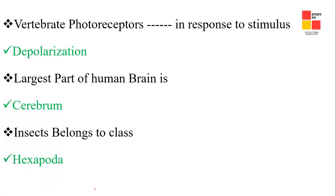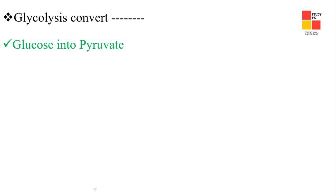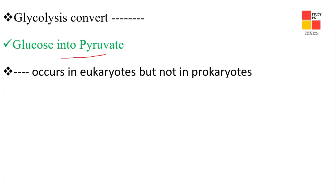Next one: insects belong to which class? The right answer is Hexapoda. Next one: glycolysis converts glucose into pyruvate.